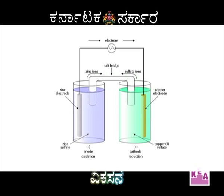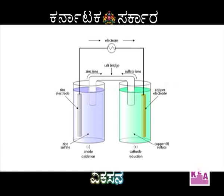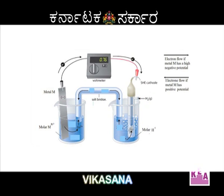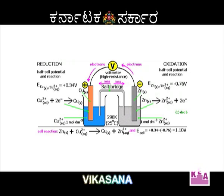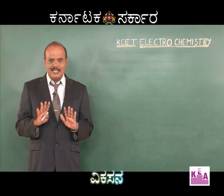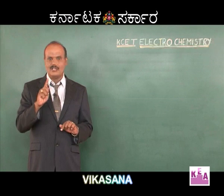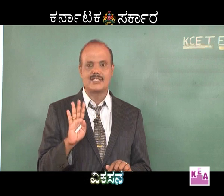After connecting the two electrodes by the salt bridge, the copper electrode acts as the cathode and the zinc electrode acts as the anode. This is decided based on the standard reduction potential values. The SRP of the copper electrode is +0.34 volts, and the SRP of the zinc electrode is −0.76 volts. When connected by the salt bridge, the zinc electrode acts as the anode and the copper electrode acts as the cathode. At the anode, oxidation takes place; at the cathode, reduction takes place.